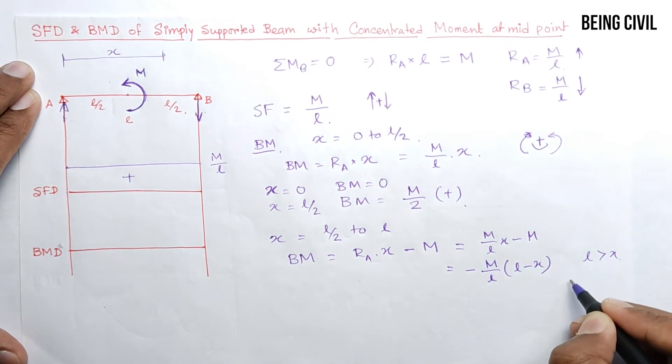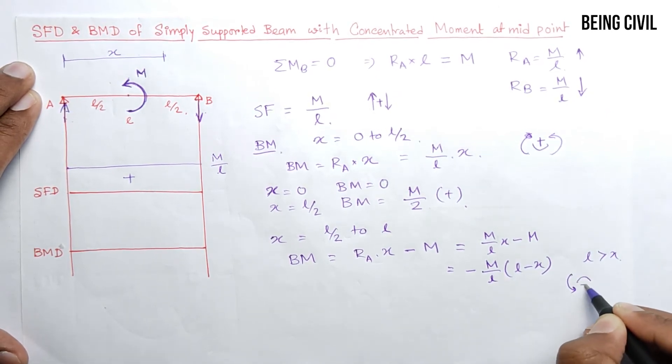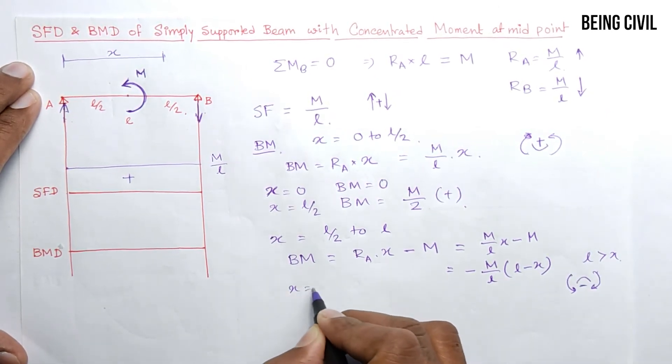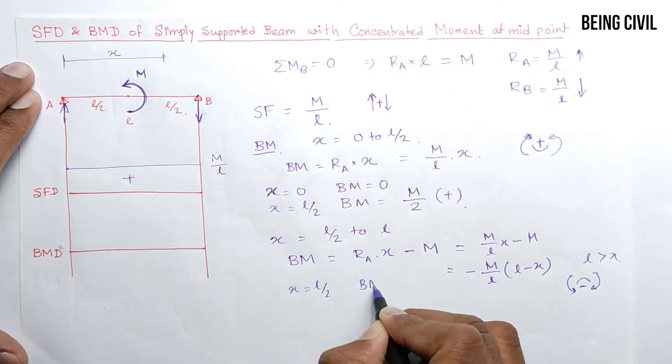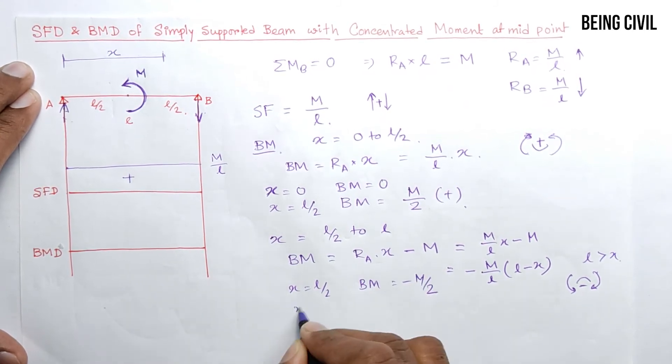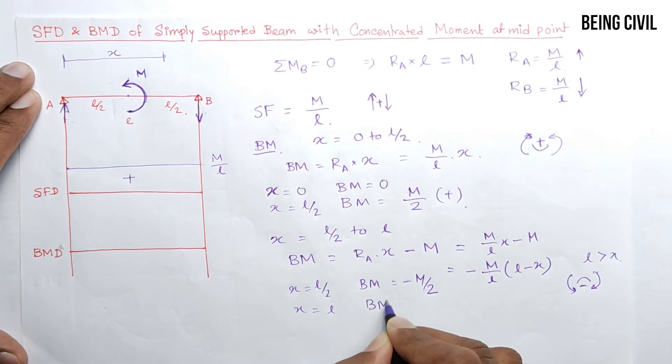Put the value X equals L/2, you get bending moment equal to minus M/2. And at X equals L, bending moment will be equal to 0.